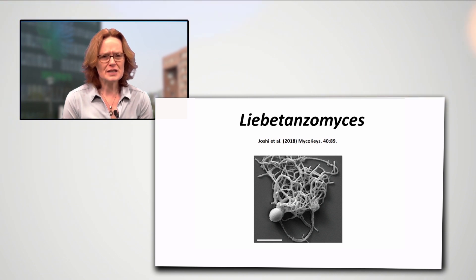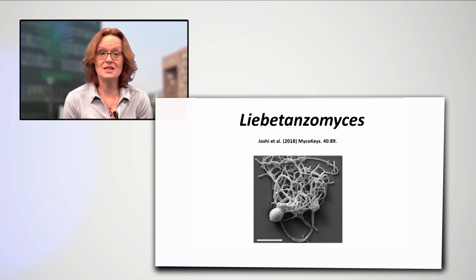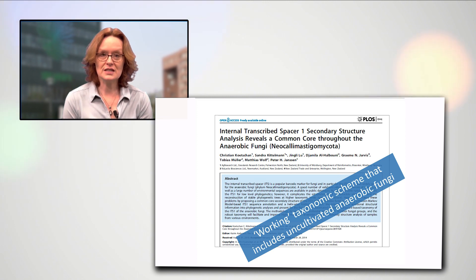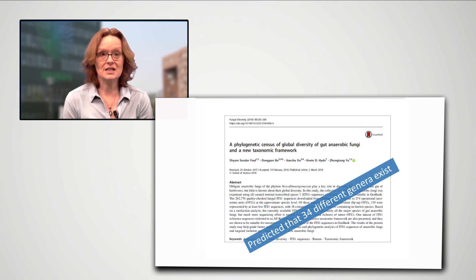Using DNA-based analysis, we now know that more anaerobic fungal genera remain to be characterised. As such, researchers have developed a working taxonomic scheme that also includes these uncultivated anaerobic fungi. Recently, it has been predicted that 34 different genera exist.